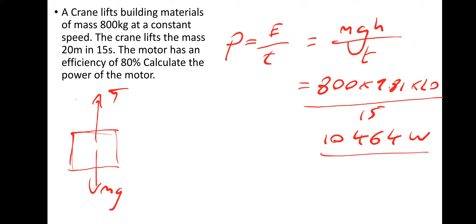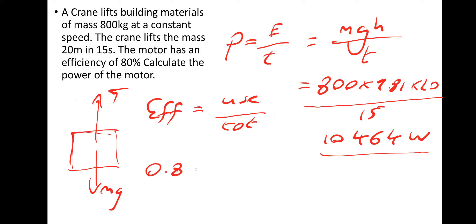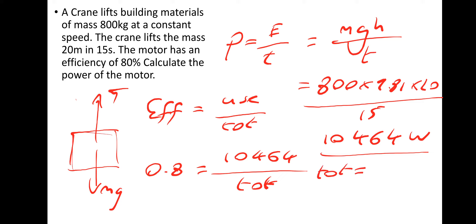Rearranging to find total power: total = 10,464 ÷ 0.8 = 13,080 watts, which rounds to 13.1 kilowatts.